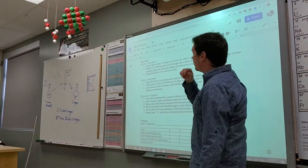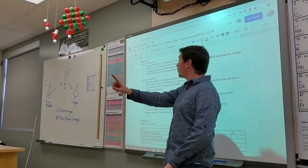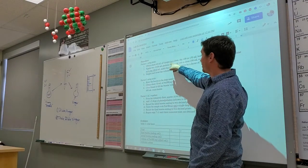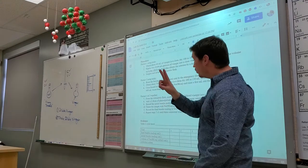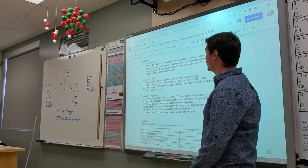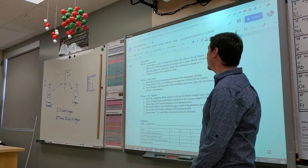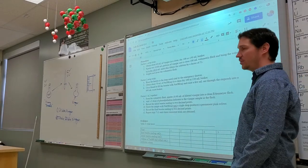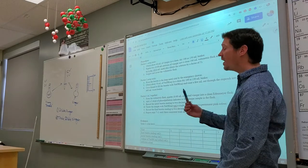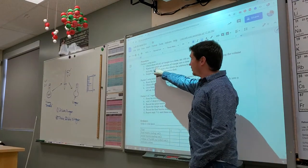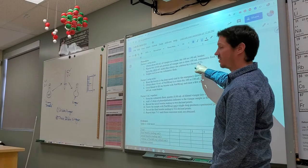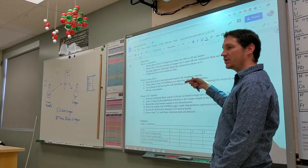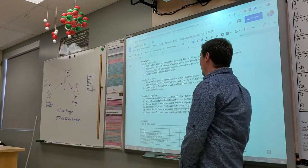Partner number one is going to obtain 40 milliliters of vinegar and pipette two 10 milliliter portions into a clean 100 milliliter volumetric flask and bring the total volume up to 100 milliliters. That's 20 milliliters inside 100, so that's a dilution factor of five.